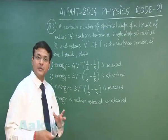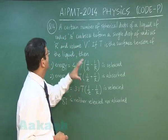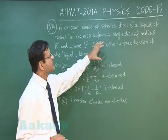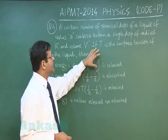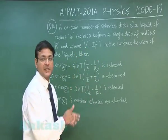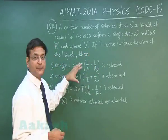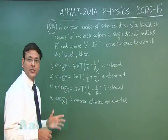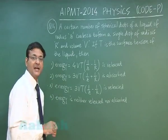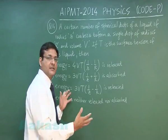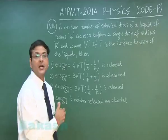Now in this question number 14 as it reads, a certain number of spherical drops of a liquid of radius R coalesce to form a single drop of radius capital R and volume V. If T is the surface tension, obvious this is a question of mechanical properties of fluids. T is the surface tension of the liquid then they have given you in the options whether energy is released or absorbed and their values.